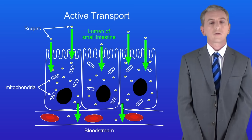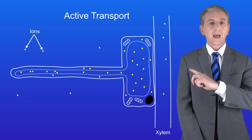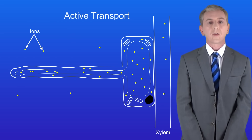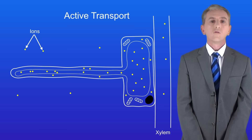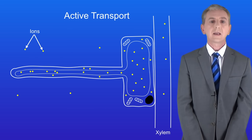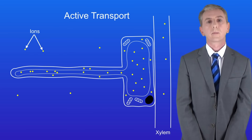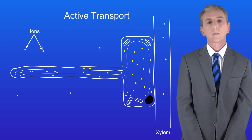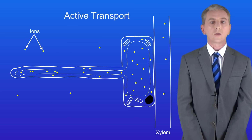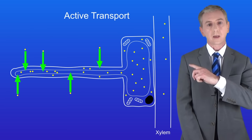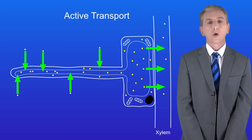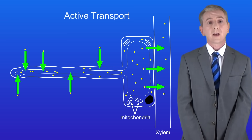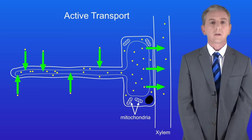Now let's look at an example of active transport in plants. This shows a root hair cell found in the roots of plants. Root hair cells transport ions such as magnesium into the plant from the soil. Plants need magnesium to make chlorophyll in the leaves. The concentration of ions in the soil is lower than the concentration inside the root hair cell, so active transport is used to move the ions into the cell. These ions are then transported into the xylem vessels and moved to the leaf. Again, root hair cells have lots of mitochondria to provide the energy for active transport.